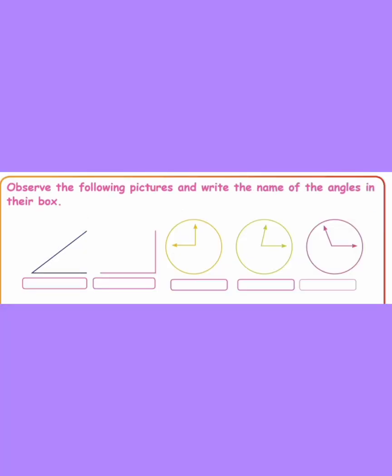Observe the following pictures and write the names of the angles in their boxes. The first picture shows an acute angle. The next one is a right angle. The last one is an obtuse angle.